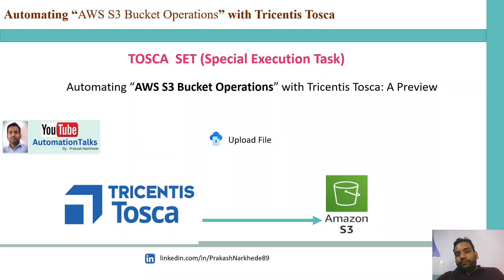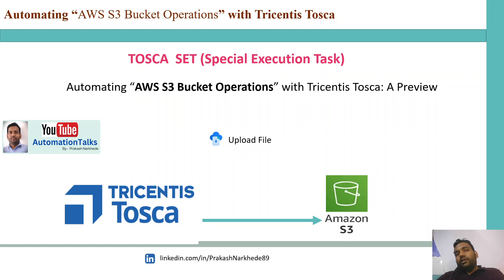As of now, Tricentis doesn't have any utility where you can connect to AWS S3 bucket directly. Obviously you can do that with PowerShell using AWS CLI commands, but that creates a dependency — you need AWS CLI installed and then write a lot of command lines.